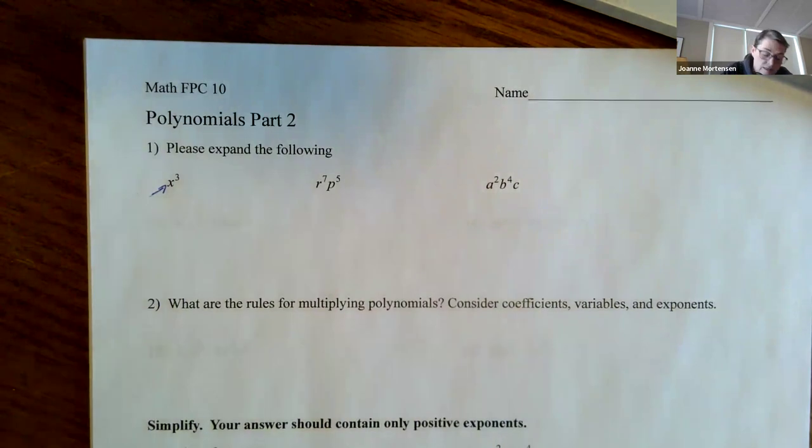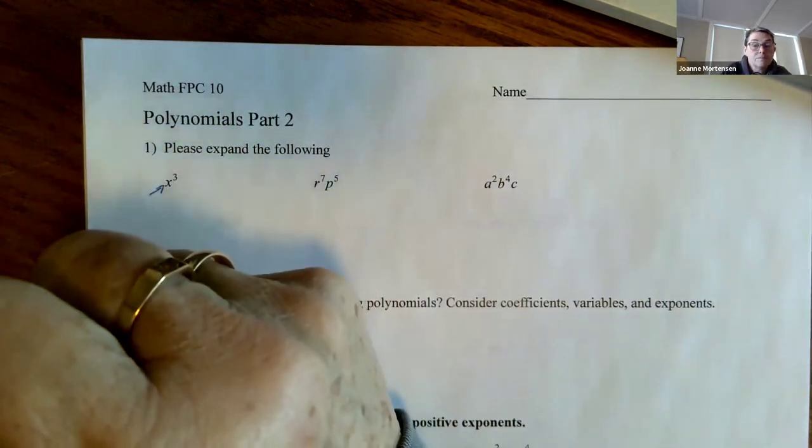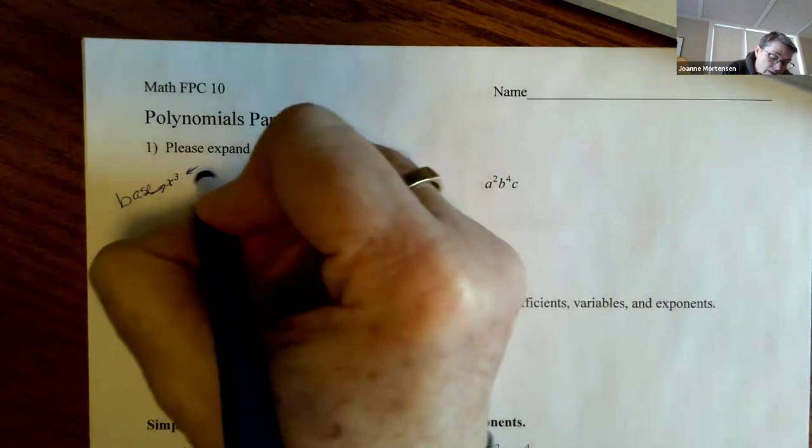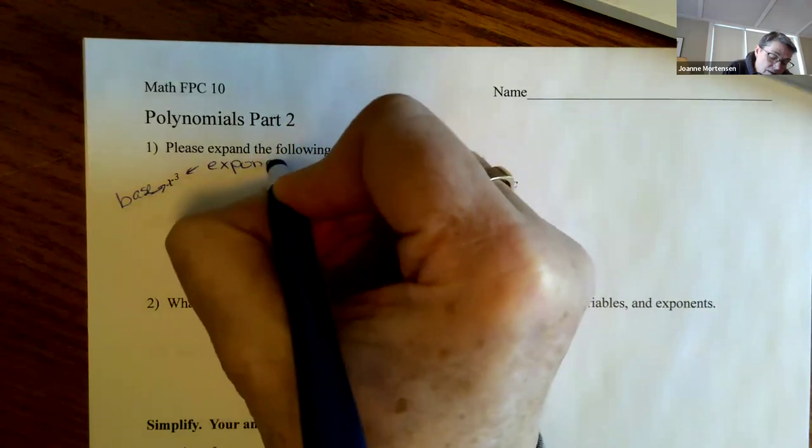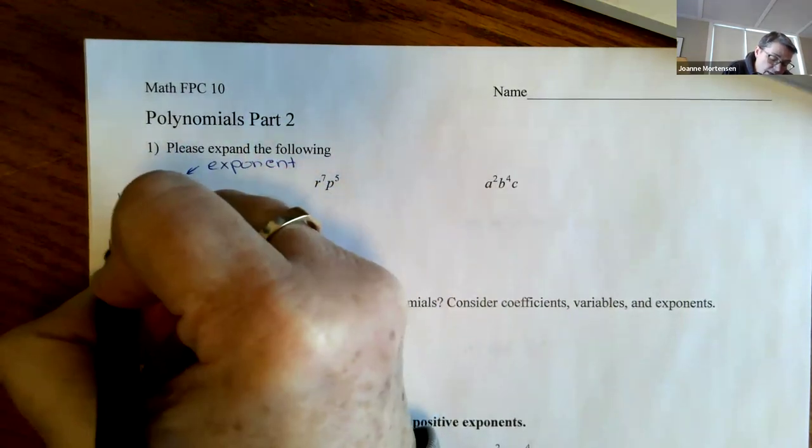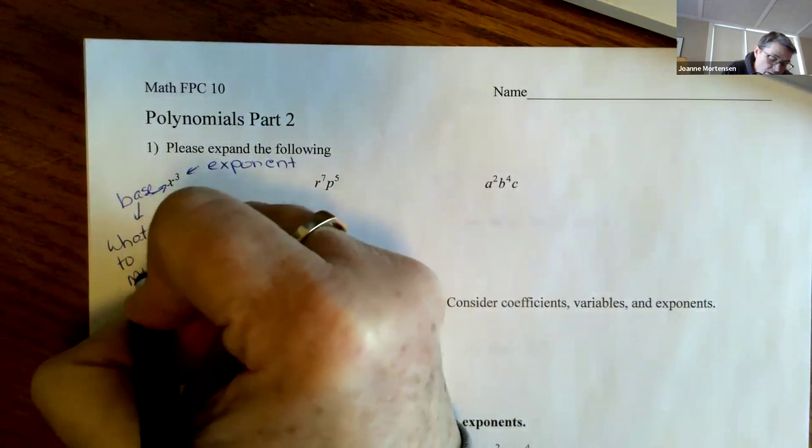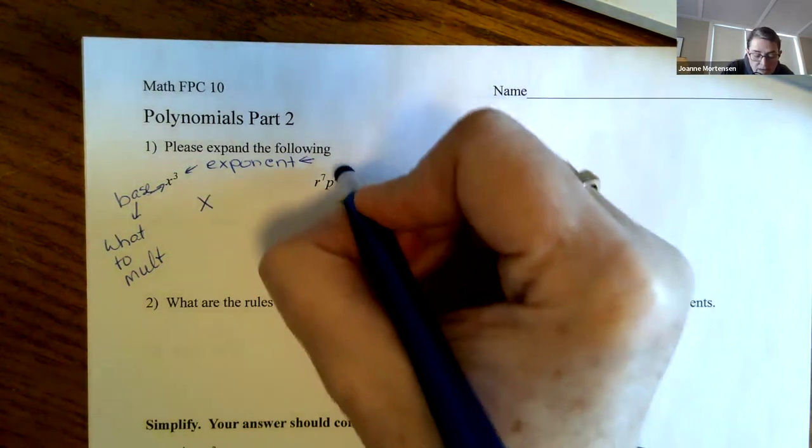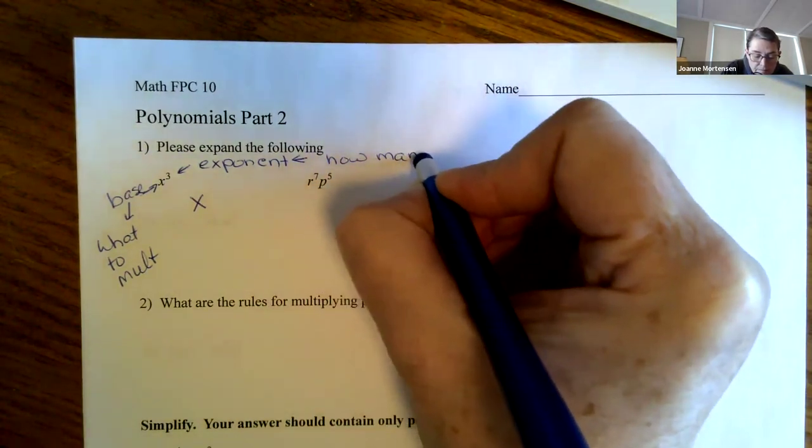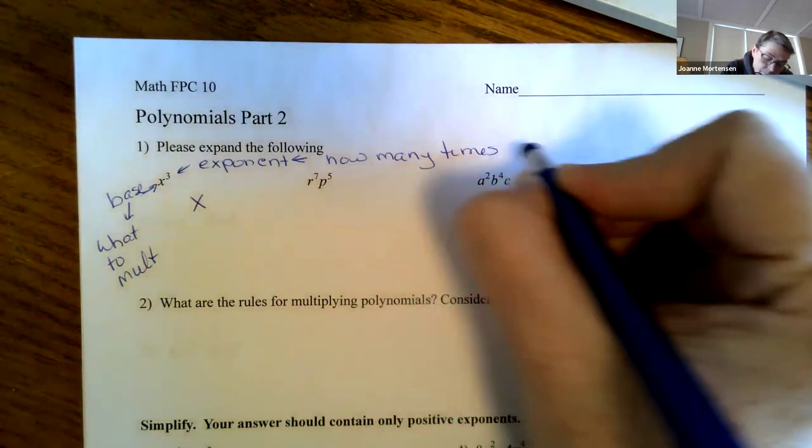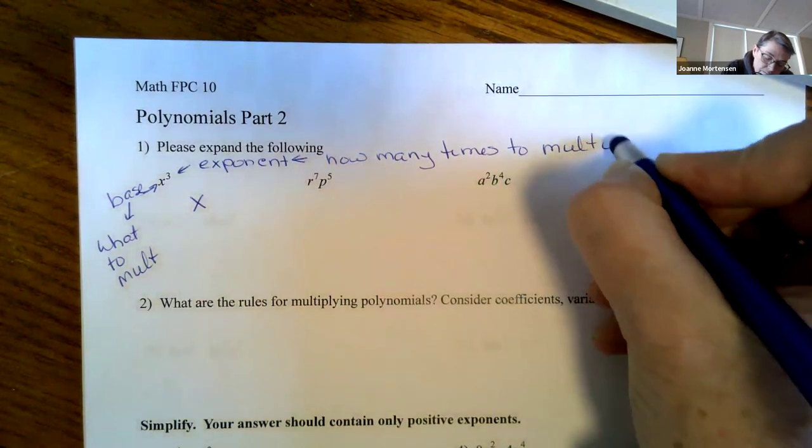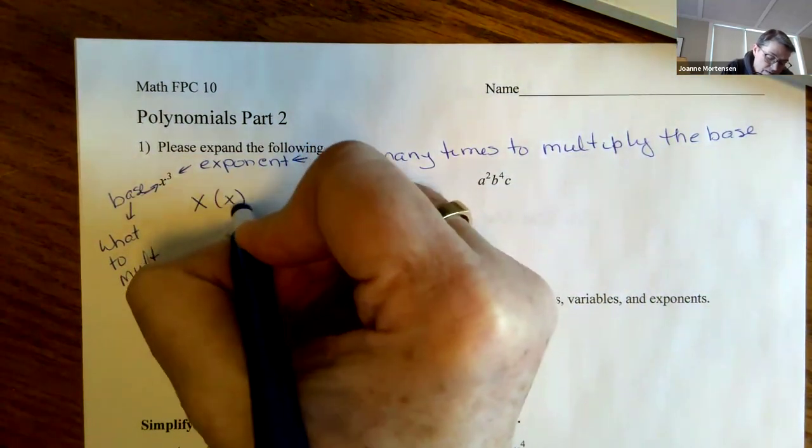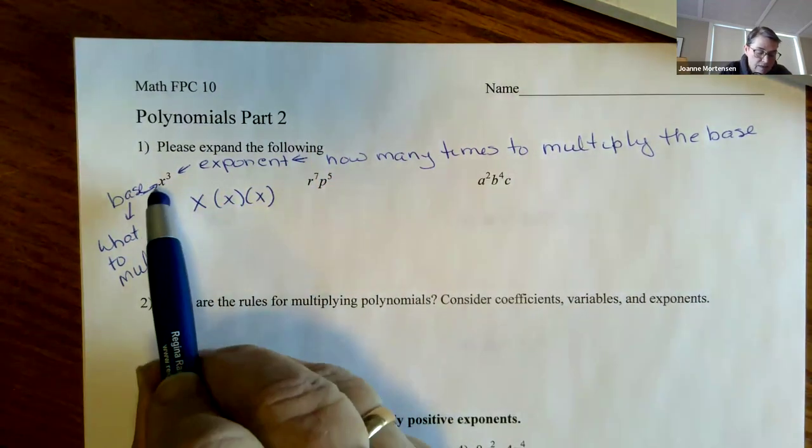You need to understand how this stuff works, because I think if you understand how it works, the rules make sense, because otherwise you're just memorizing rules and it's really easy to get them wrong. So we're starting with expansion and you've seen this before. So x to the third, actually before we start, when we're talking about exponents, we call this the base.